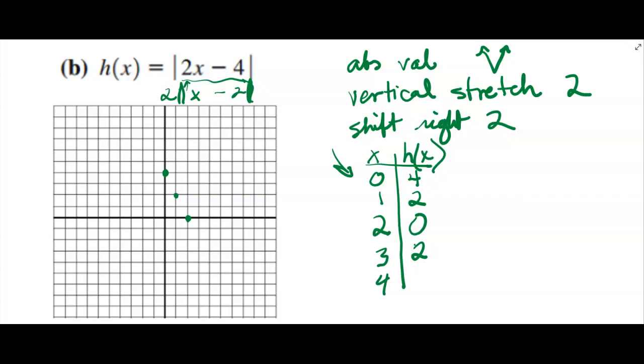All right. And if you plug in 4, 4 minus 2 is 2. Absolute value of 2 is 2, 2 times 2 is 4. I forgot to graph the 3, 2. That's right there, 3, 2. And then 4, 4. See the nice little V shape?